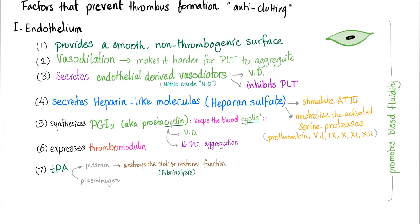First, the endothelium. It provides a smooth, non-thrombogenic surface so that the platelets cannot attach and go crazy. Vasodilation makes it harder for platelets to aggregate. The endothelium secretes endothelial-derived vasodilators such as nitric oxide, which will vasodilate and inhibit platelet aggregation.